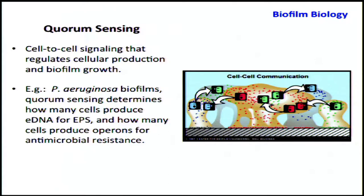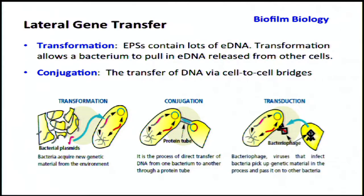Quorum sensing is cell-to-cell signaling that regulates cell production within a biofilm. For example, in the Pseudomonas aeruginosa biofilm — the keystone species — some cells produce extracellular DNA for the EPS, while others produce operons useful for microbial resistance. I'll return to quorum sensing in a couple of minutes. Lateral gene transfer operates within biofilms via mechanisms including transformation and conjugation, and I'll return to that as well.